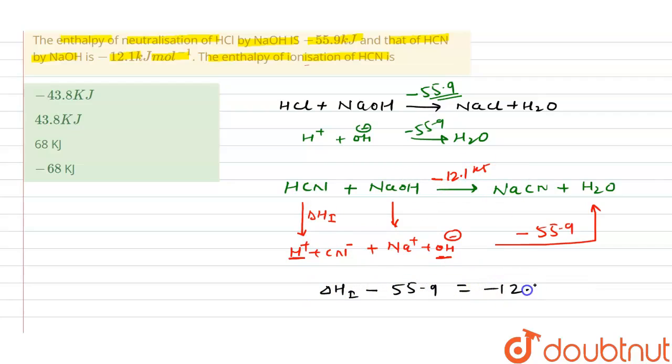So basically we have to subtract this value 55.9 - that becomes positive after taking it to the right hand side - and that is subtracted by 12.1. So this value is basically 43.8.